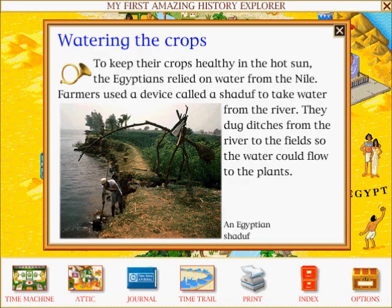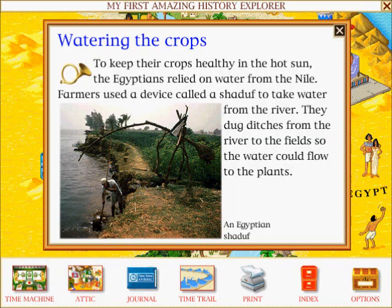Watering the crops: To keep their crops healthy in the hot sun, the Egyptians relied on water from the Nile. Farmers used a device called the shadoof to take water from the river. They dug ditches from the river to the fields so the water could flow to the plants.